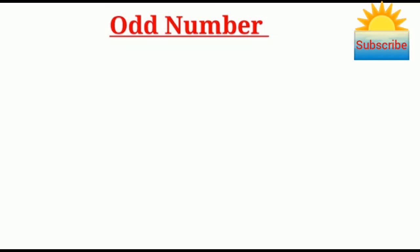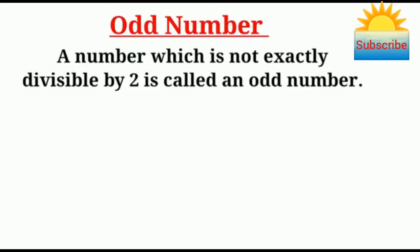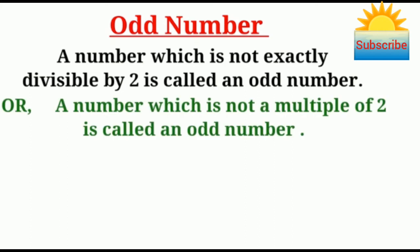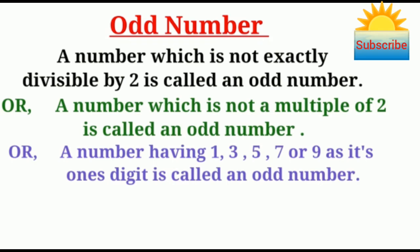A number which is not exactly divisible by two is called an odd number. A number which is not a multiple of two is called an odd number. A number having one, three, five, seven, or nine as its one's digit is called an odd number.